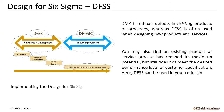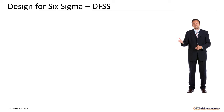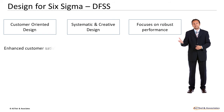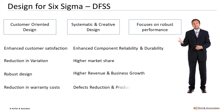Implementing the Design for Six Sigma approach ensures that the process and product design will meet your customer requirements, and you are launching a low defect level product or service right from the start. Benefits of DFSS: it is a customer-oriented, systematic, and creative design. It focuses on robust performance and is based on prevention philosophy. Benefits include enhanced customer satisfaction, reduced variation, robust design, reduction in warranty costs, enhanced component reliability and durability, higher market share, higher revenue and business growth, defect reduction, and product acceleration.